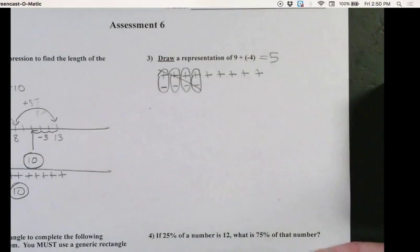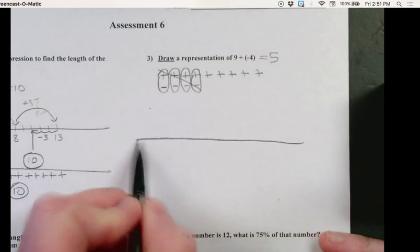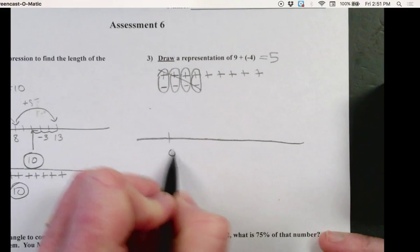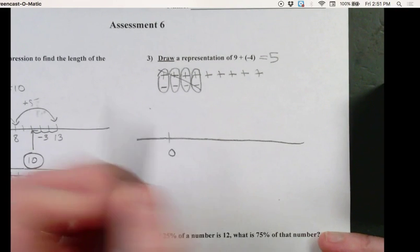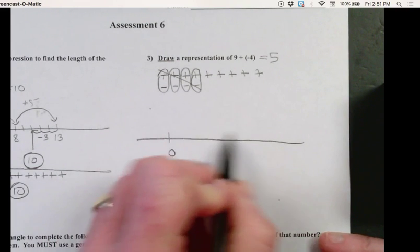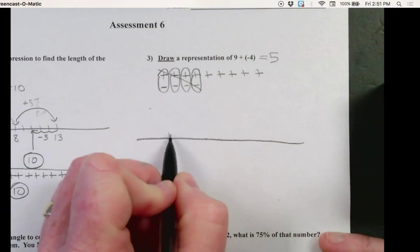Okay. Another way to do this is on a number line. So let's say zero is here. Let's think about Cecil. Cecil moved 9 units in the positive direction.